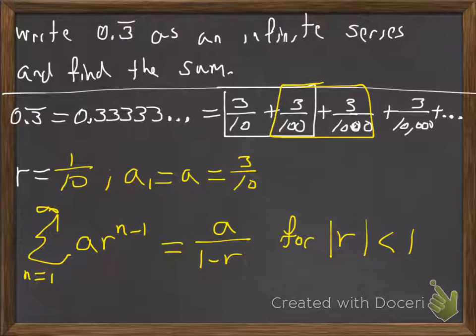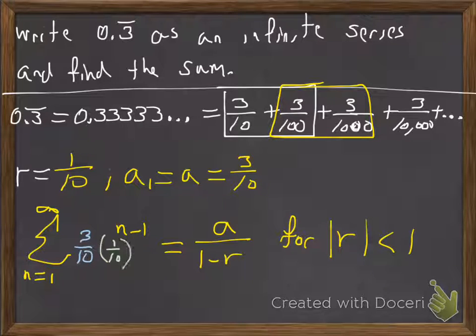So what we're going to do is we're going to take our geometric series formula, and we're going to swap out the A with 3 over 10. And then we're going to replace the R with 1 over 10, okay? And then the A with 3 over 10 and the R with 1 over 10, okay?